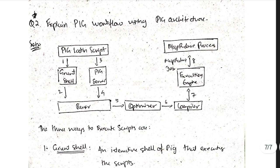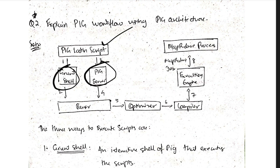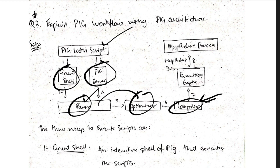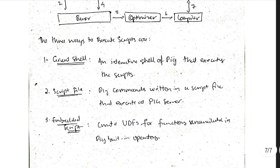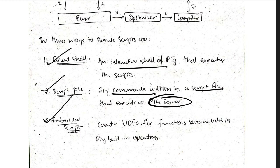The Pig workflow/architecture diagram works similarly to Hive. A Pig Latin script in Grunt Shell executes commands; the script is passed to the Parser for syntax checking, then to the Optimizer to optimize the code, then to the Compiler for syntax analysis, and finally to the Execution Engine, which performs MapReduce. There are three execution modes: Grunt Shell (interactive shell), Script File (commands written in a script file), and Embedded Script (UDFs — user-defined functions unavailable in built-in Pig operations).